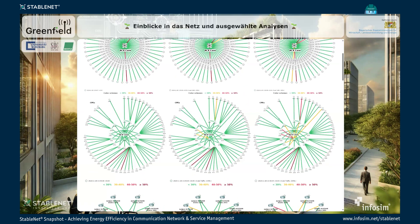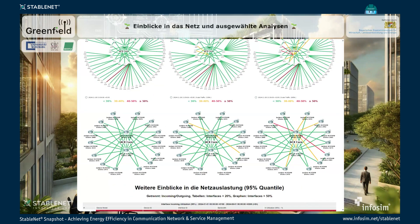Another view shows the core network fully, and here we have only the core devices shown to identify which are the most heavily utilized devices in the system. You can see that the Juniper ACX devices here are the most important ones to look at.